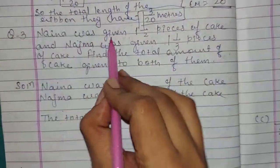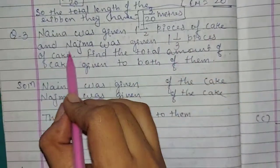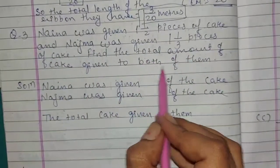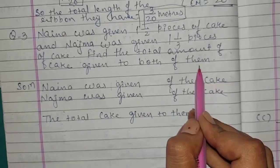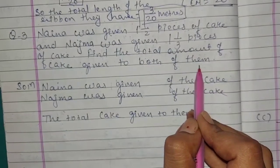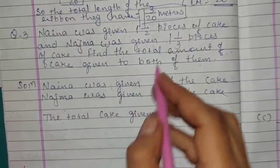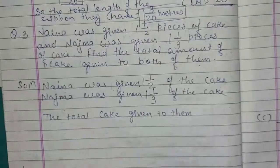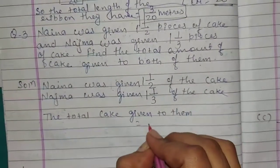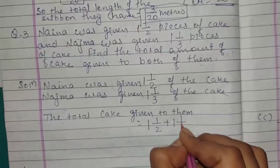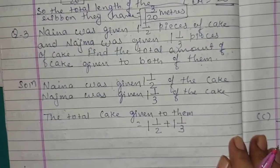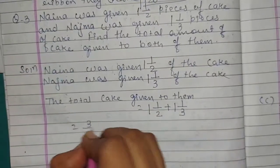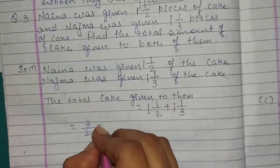Question number 3: Naina was given 1 integer 1 upon 2 pieces of cake and Najma was given 1 integer 1 upon 3 pieces of cake. Find the total amount of cake given to both of them. We will do addition. Naina had 1 integer 1 upon 2 and Najma had 1 integer 1 upon 3 of the cake.